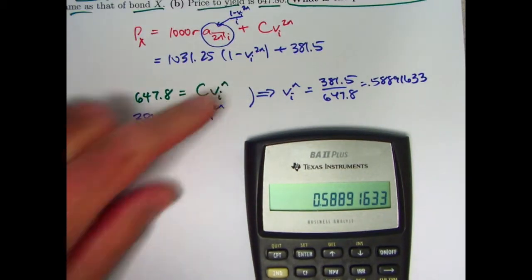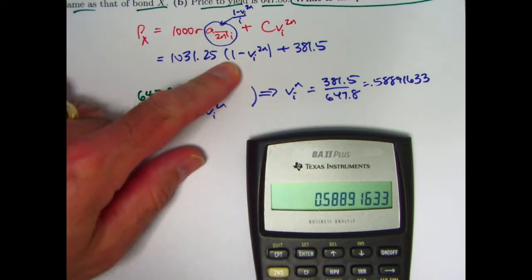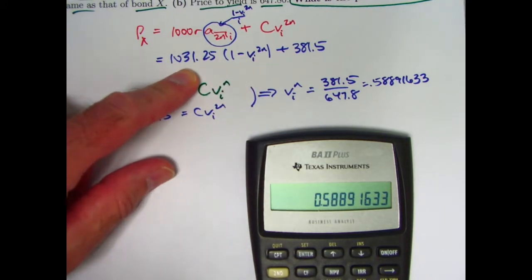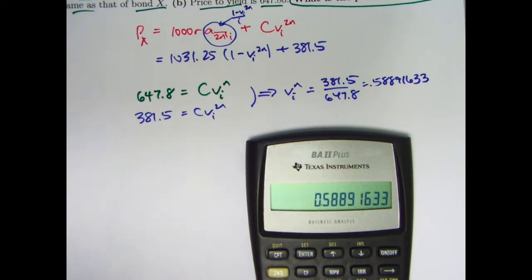I'm almost done. All I have to do is square that, subtract from 1, multiply by 1031.25, and then add 381.5, and I'll be done.